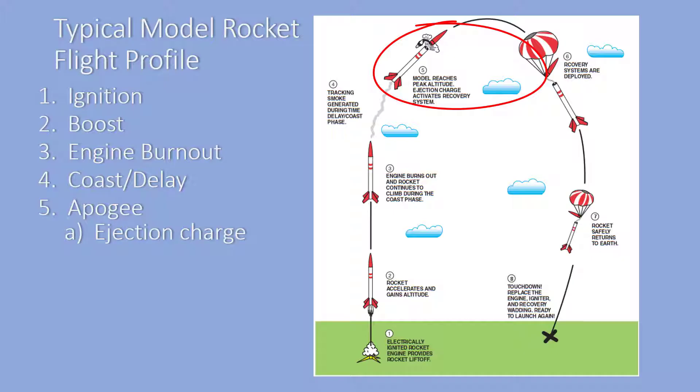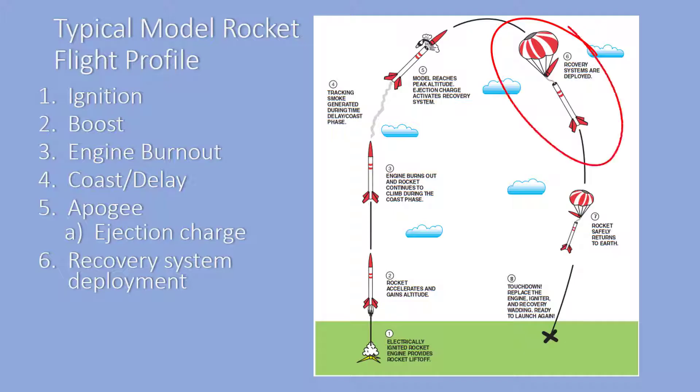If we've designed our rocket properly and picked the engine just right, the ejection charge will fire just at apogee. It will take a while for the parachute or streamer in the recovery system to unfurl and fully deploy. The point where the streamer or parachute is fully deployed is called the recovery deployment point.